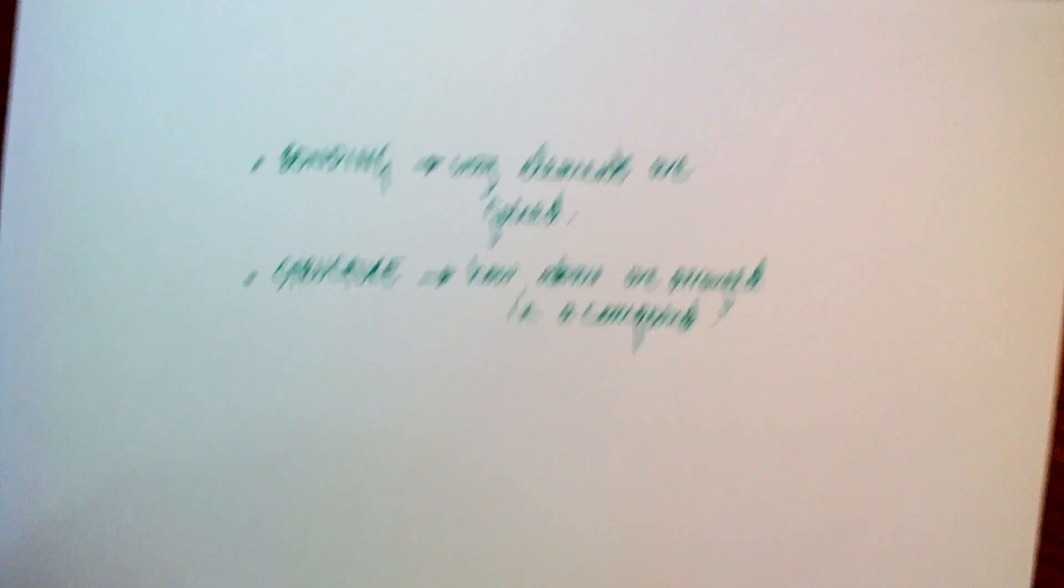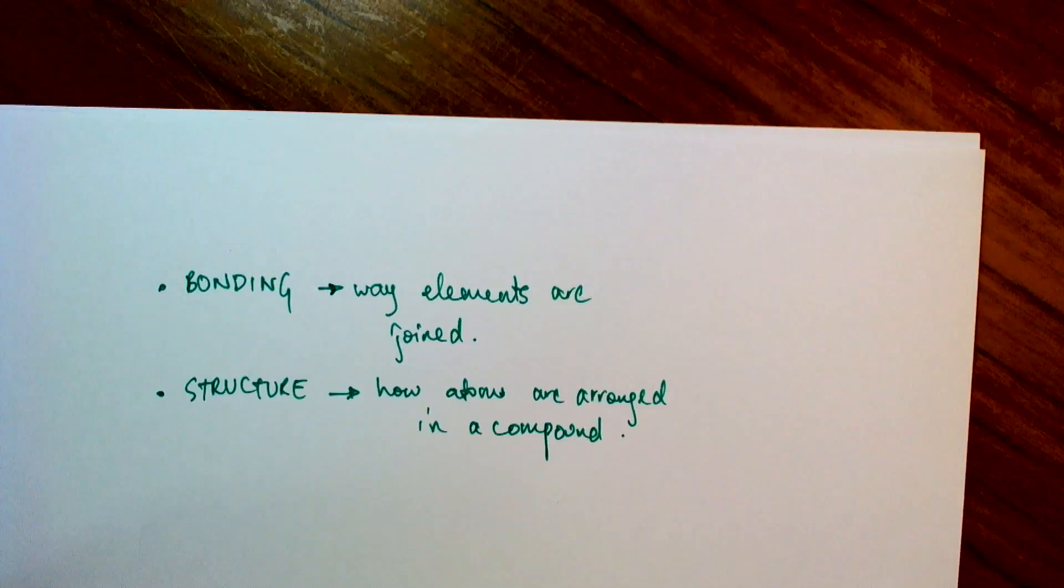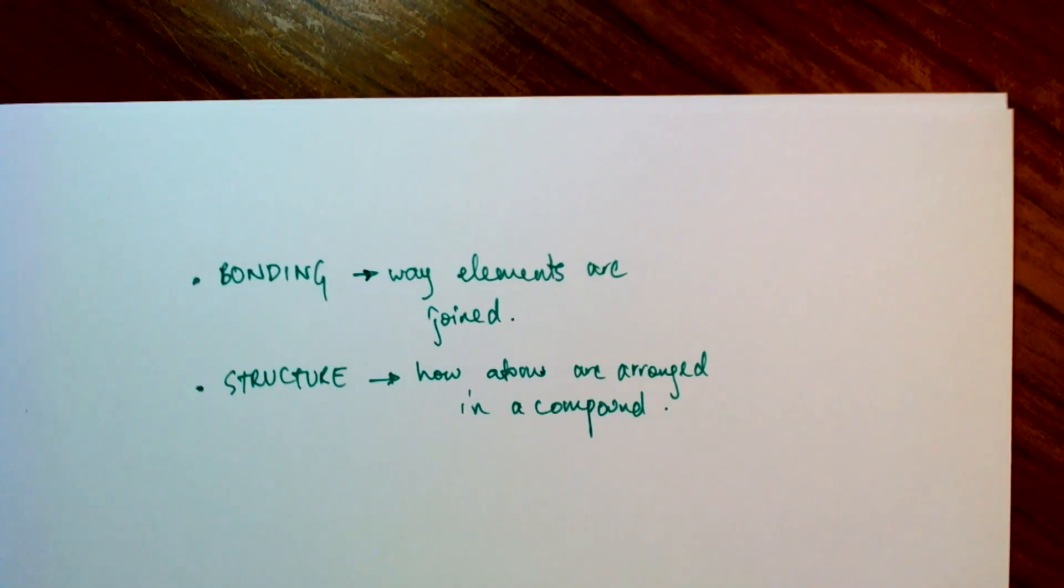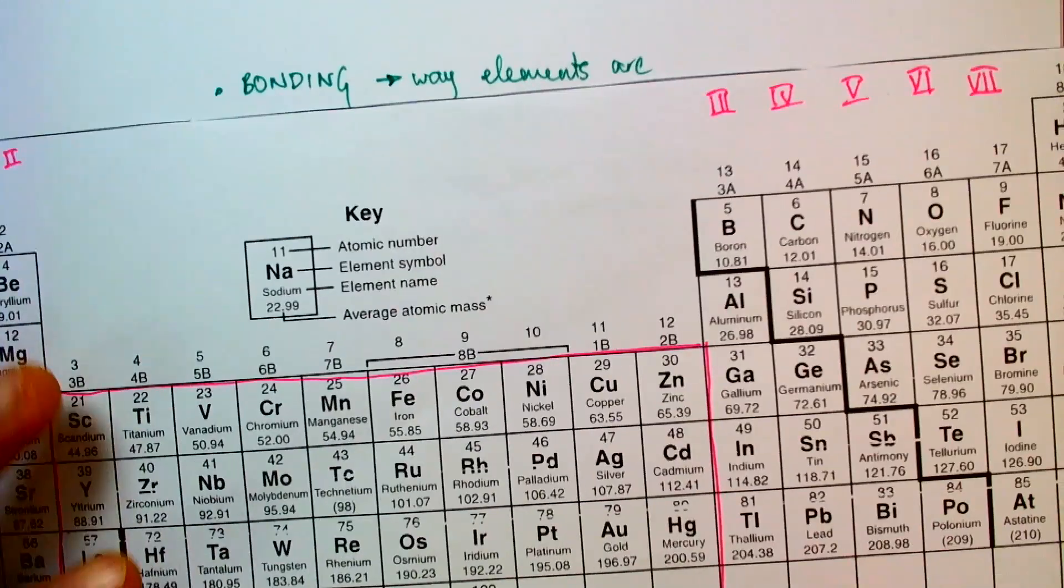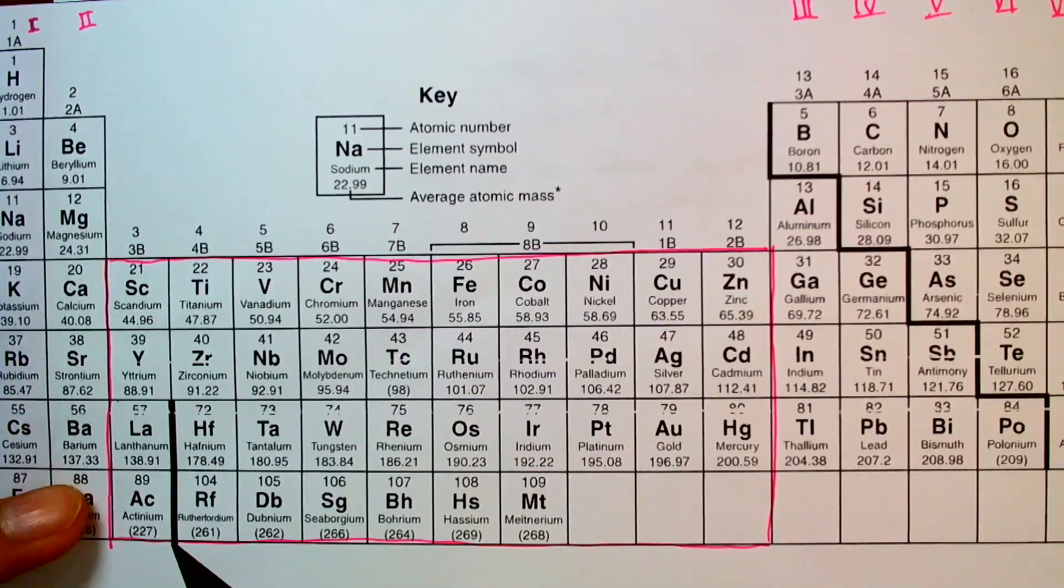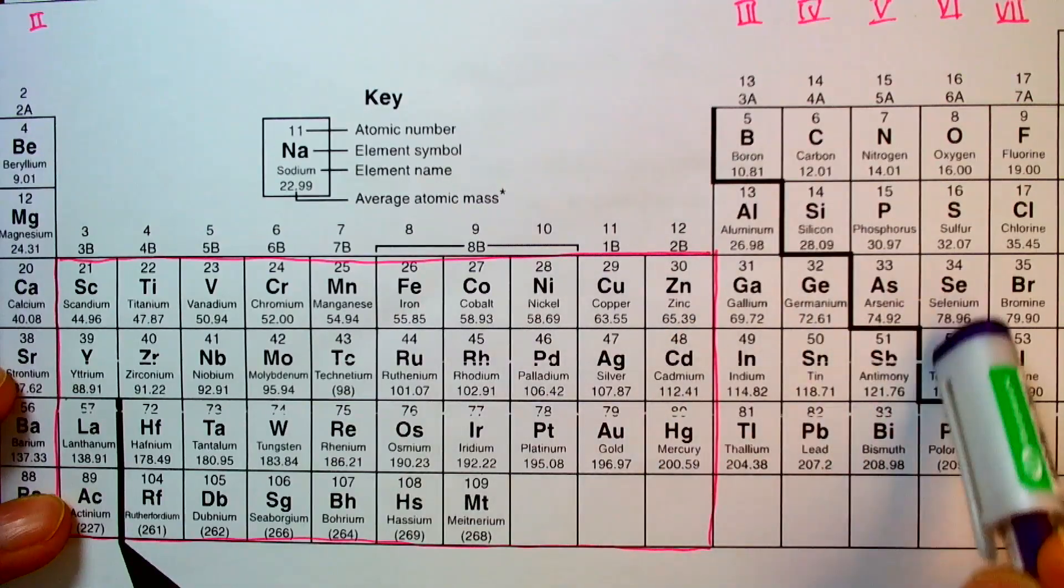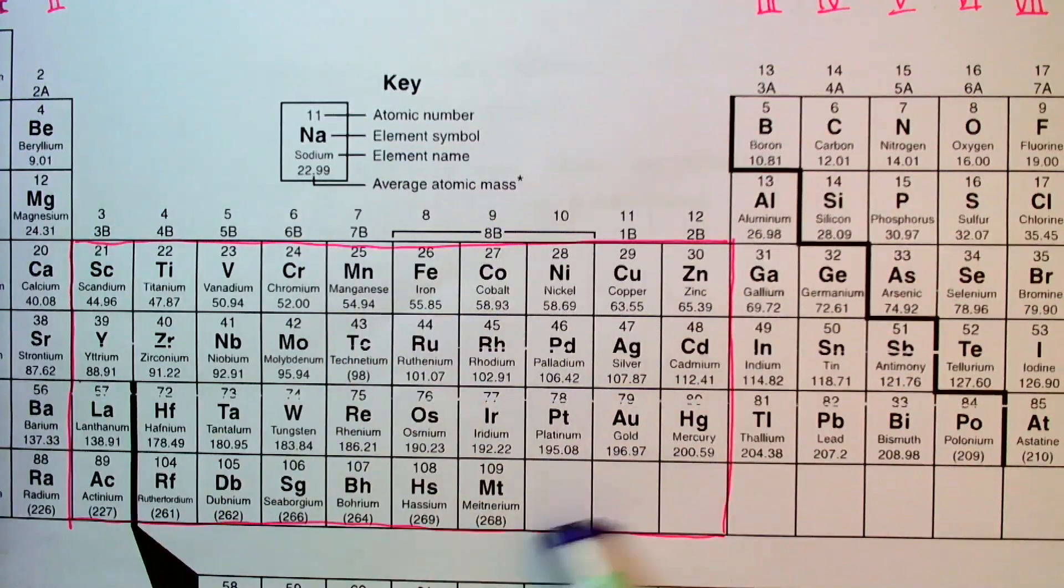Now, for bonding, there are three different ways that the elements can be joined together. And the way I like to structure this is by taking a look at the periodic table to start with. So I mentioned briefly that anything above this staircase is a non-metal, anything below this staircase is a metal,